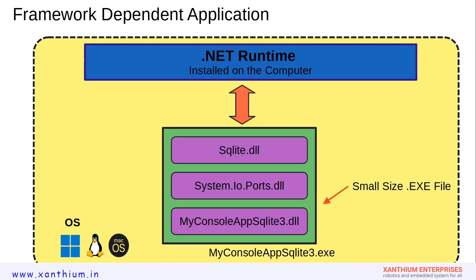This is the block diagram of a framework-dependent application. The yellow box within the dotted line represents the operating system, which can be anything like Windows, Linux, or Mac OS. Our executable is myconsoleapp.escalate3.exe — the same app created in previous examples. We have SQLite.dll, system.io.pods.dll, myconsoleapp.escalate3.dll, and all the required code bundled together inside this exe file.